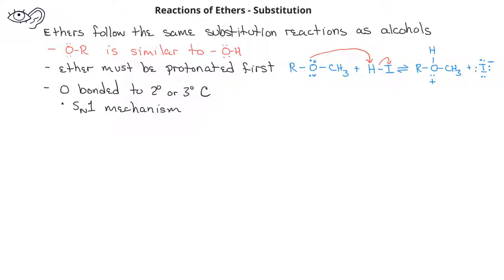As with alcohols, we will use a hydrogen halide and heat, whereas for a primary, these will follow SN2 mechanisms.